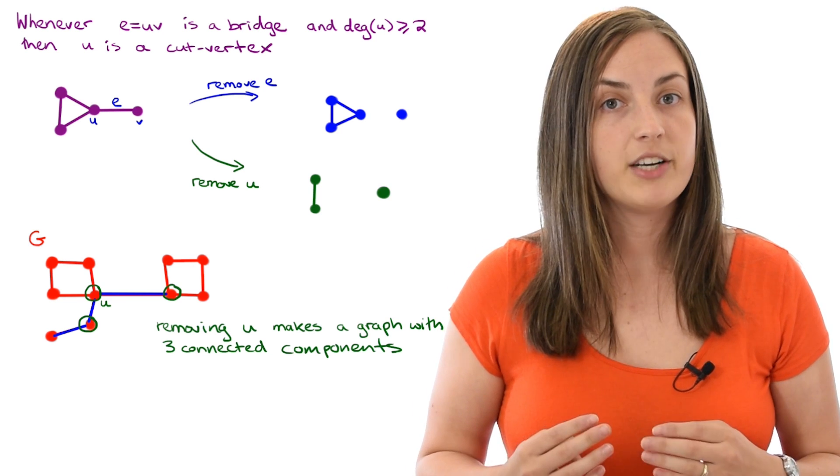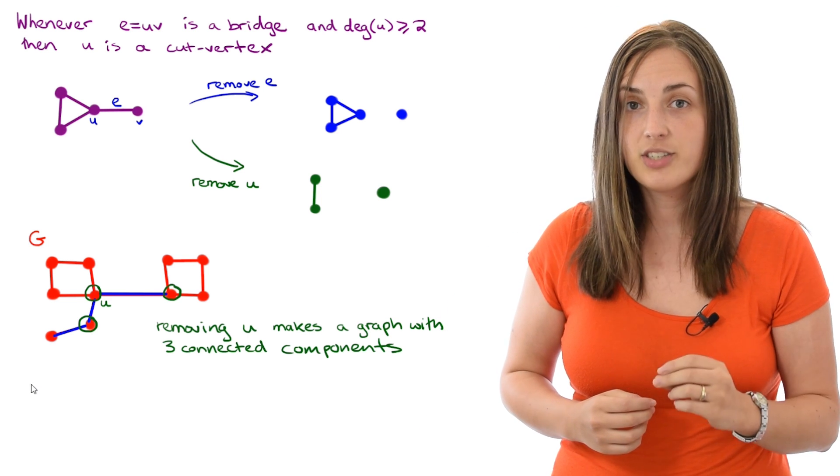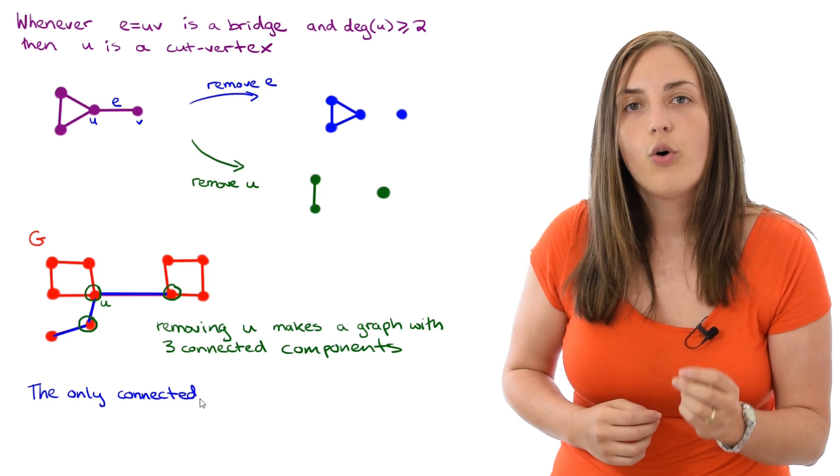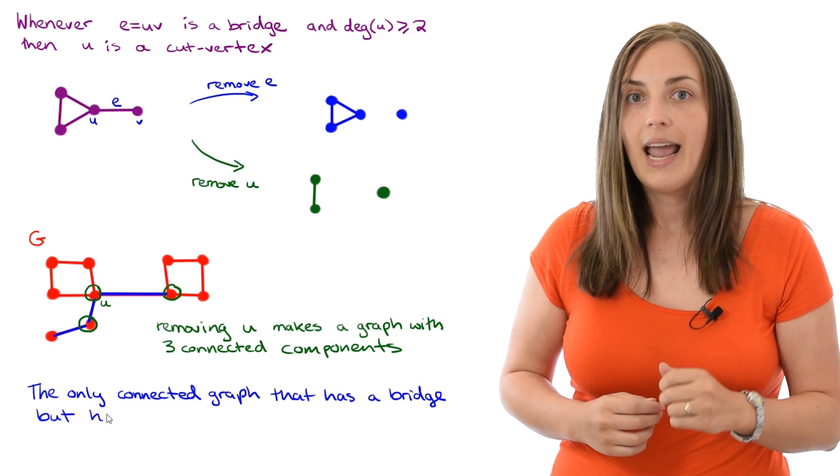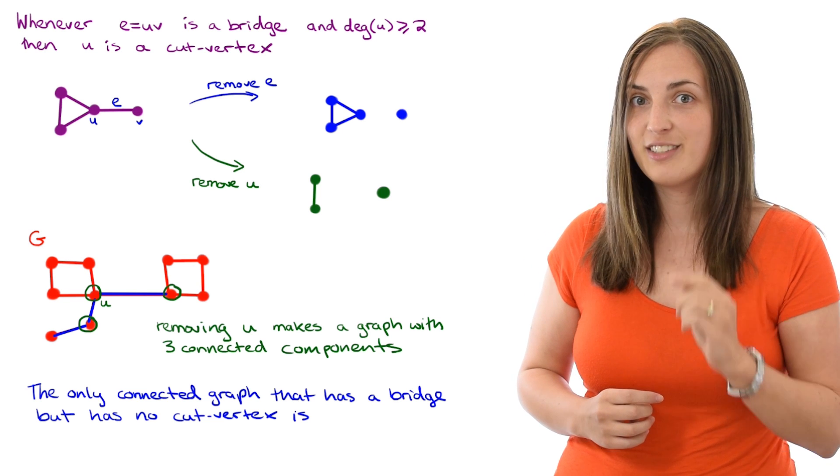We've noticed that when you have a bridge, you usually have a cut vertex. Now it's interesting to notice that the only connected graph which has a bridge and no cut vertex is, think for yourself, see if you can get it,